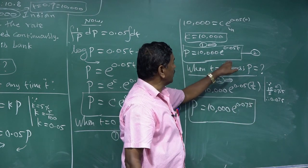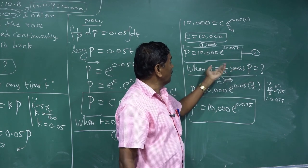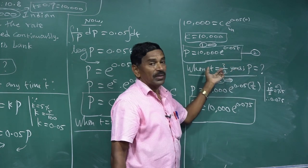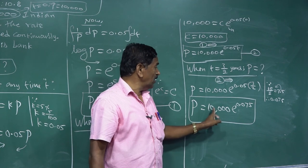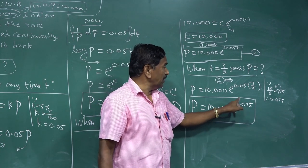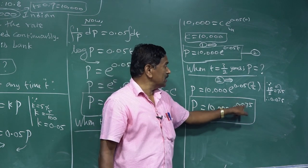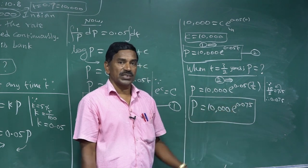Therefore, after 18 months the principal equals 10,000 times e^(0.075) rupees. This is the final answer for the amount in the bank account after 18 months.